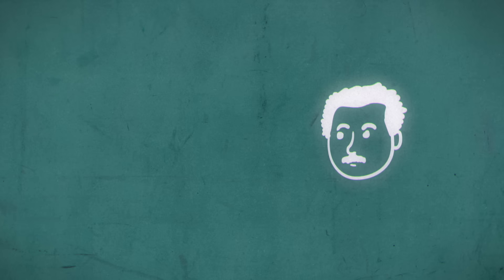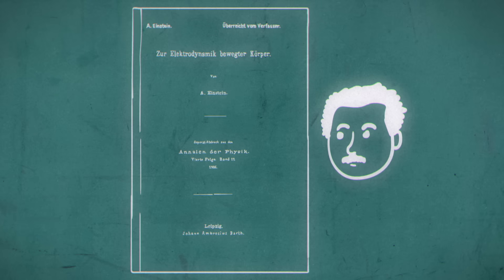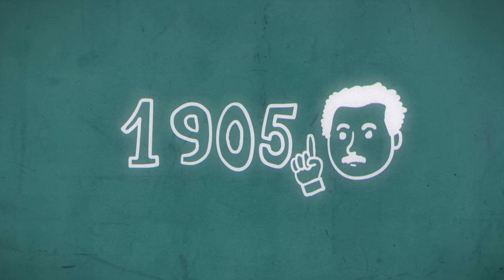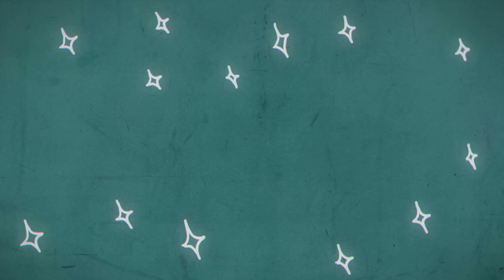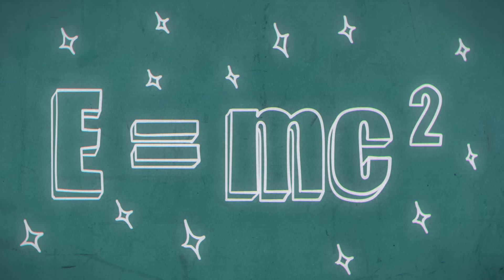Ever since Albert Einstein published his Special Theory of Relativity in 1905, one equation has been the bane of humans hoping to explore the stars— E equals mc squared.